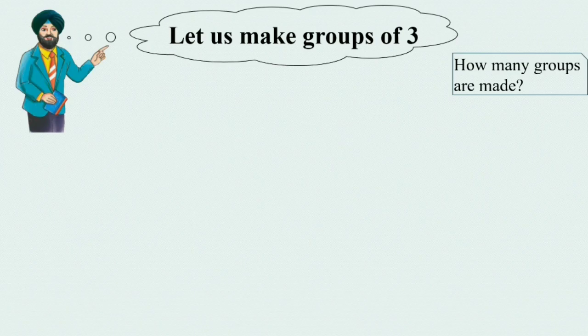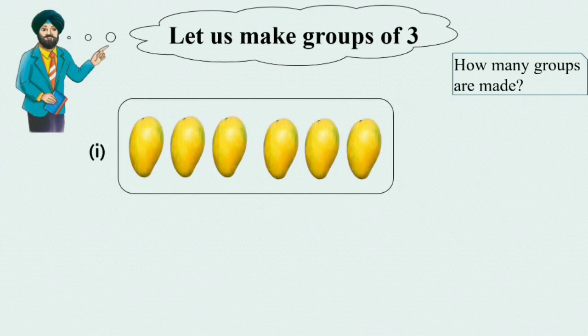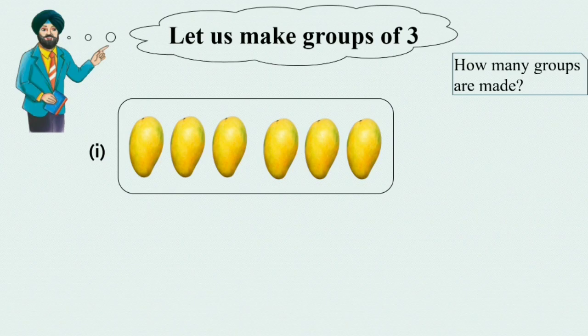In first question, there is a box and we have some mangoes. We have to make groups of 3. Let us count these mangoes. 1, 2, 3, 4, 5, 6. So we have 6 mangoes here and we have to make groups of 3.